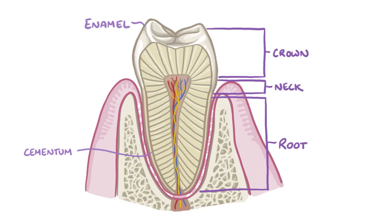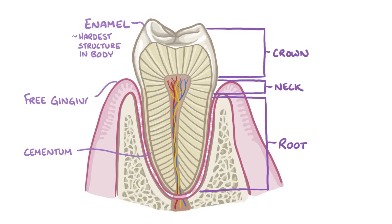Enamel has such a high mineral content that it's the hardest substance in the human body. The portion of gingiva that sticks up and is not anchored to the tooth is sometimes called the free gingiva, and the space between the free gingiva and the crown is called the gingival crevice or gingival sulcus.